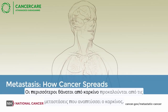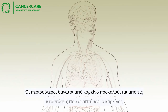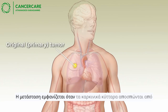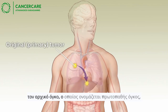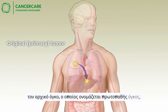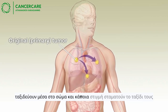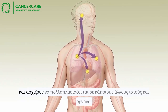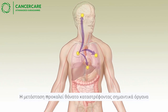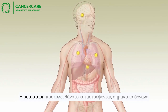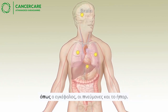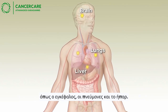Most cancer deaths are caused by metastatic cancer. Metastasis occurs when cancer cells break off from the original tumor, also called the primary tumor, travel through the body, and begin to grow in other tissues and organs. Metastasis causes death by damaging important organs, such as the brain, lungs, and liver.